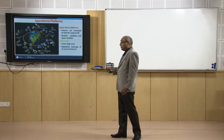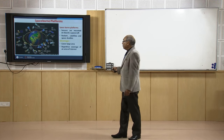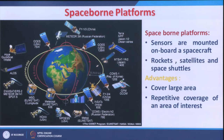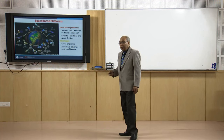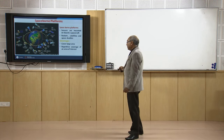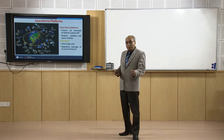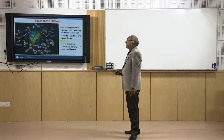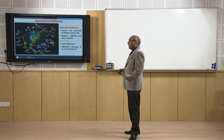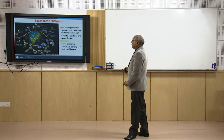Spaceborne or satellite-based remote sensing is nowadays the most popular. Many countries have their own satellites, including India. Sensors are mounted on board a spacecraft and launched by rockets or other vehicles. There are various advantages: synoptic view means covering a very large part of the earth in one pass depending on resolution. Repeatability is very possible with satellites — once put in an appropriate orbit, it keeps acquiring data as long as it stays in space. That is a very big advantage with spacecraft.